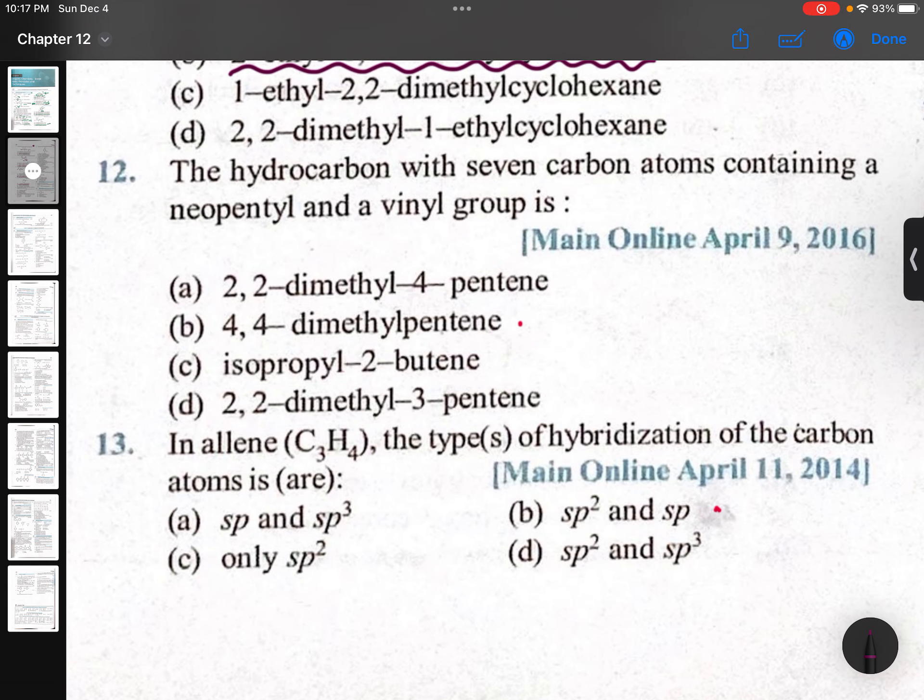The hydrocarbon with seven carbon atoms containing a neopentyl and a vinyl group. Neopentyl means it must be like this - already how many carbons are over? Five carbons are over. And vinyl group means CH2=CH2. Priority: one, two, three, four, five. Double bond gets priority, so 4,4-dimethyl-pent-1-ene. You can append 'one' also - pent-1-ene.